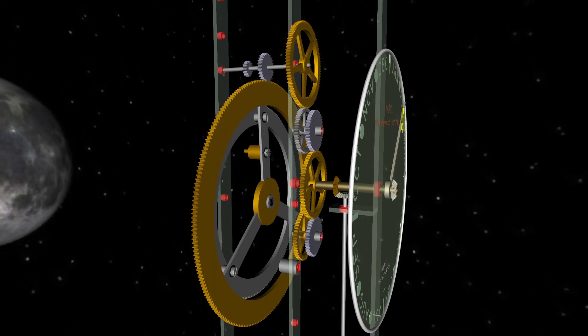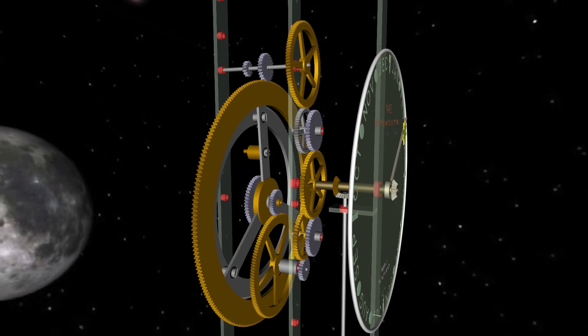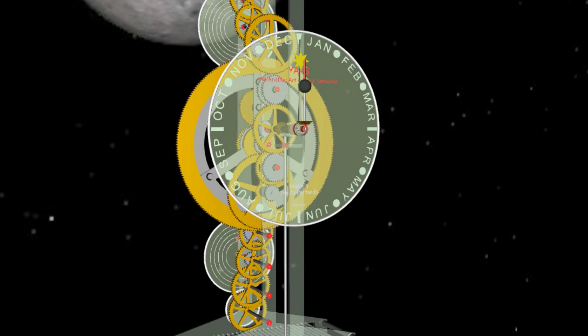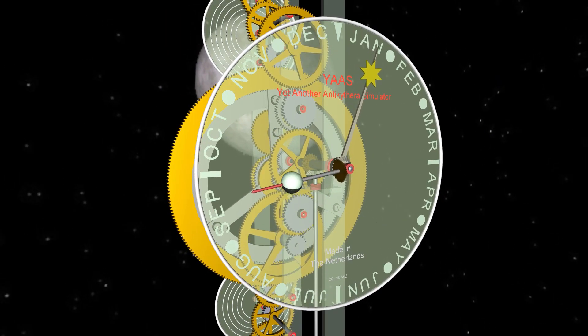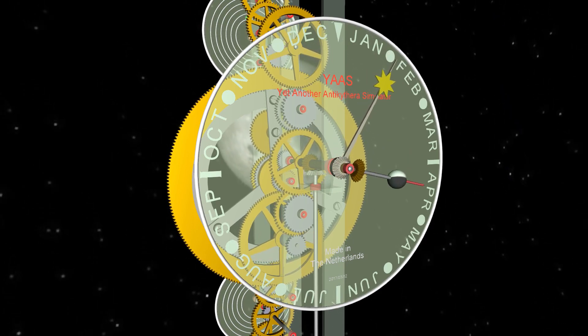The correct calendar date was indicated by the date pointer as it was moved by the gear. The front part of the Antikythera mechanism had a large dial containing pointers. These pointers were used to show the positions of the sun and the moon in the zodiac.